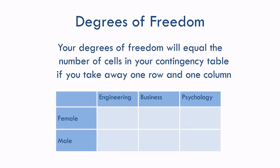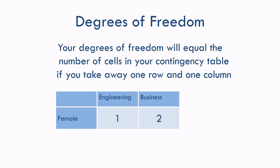That's pretty easy. But if you want something even easier, just look at your contingency table. Take away one row and one column, and count the number of cells you have left. So let's take them away and see what's left: one, two. That's it — two degrees of freedom.